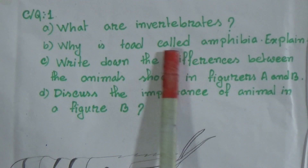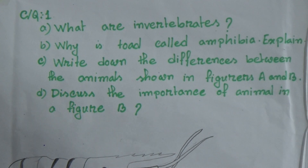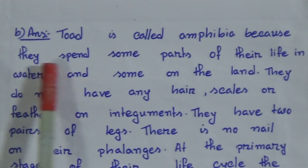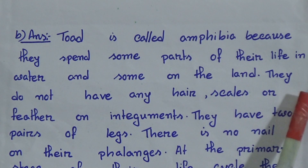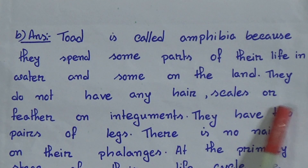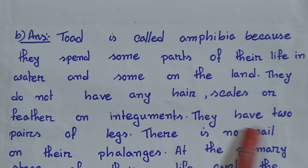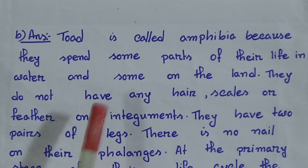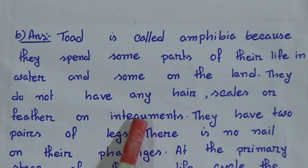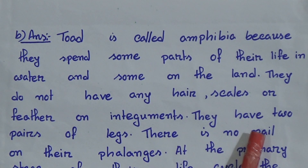Part B: Why is toad called amphibia? Answer: Toad is called amphibia because they spend some parts of their life in water and some on land. They do not have any hair, scales, or feathers on their integuments — integuments means the outer layer of their body. They have two pairs of legs, and there is no nail on their phalanges, meaning their fingers.